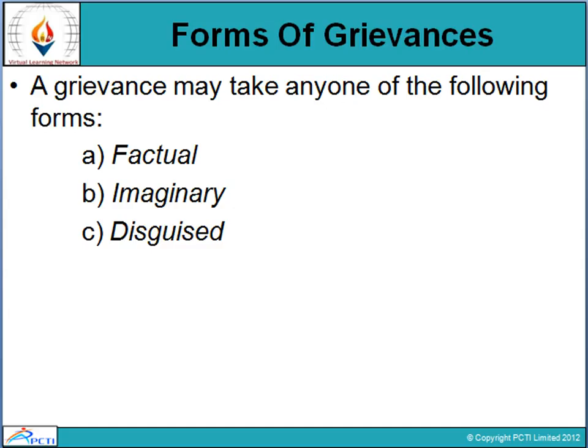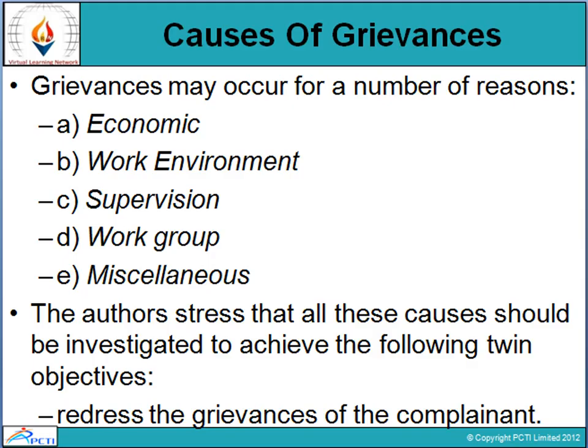Factual grievance is what everybody in the organization is facing, at any level of hierarchy. Imaginary is when an individual or group of persons is facing a particular issue. The third type is disguised grievance — a situation which covers up the truth. The real picture is something else but is being shown as something different. For example, a person is very dissatisfied with a colleague but mentions being dissatisfied with their job. That is a disguised grievance.